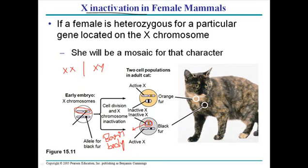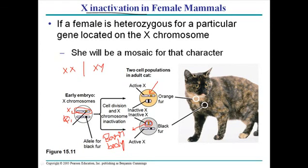Because we have one fully functional X chromosome, we don't need the other. But if you have two different alleles on those two X chromosomes — for example, in a cat, X1 has the allele for black fur and X2 has the allele for orange fur — then in some cells X2 is activated and X1 is inactivated, producing orange fur, while in other cells X1 is activated and X2 is inactivated, producing black fur.